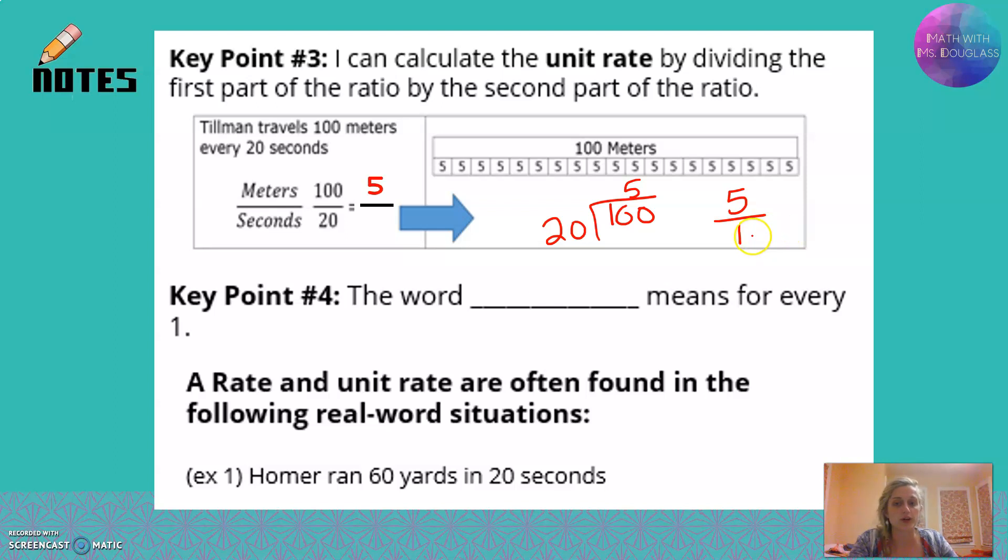And that's where the word per comes in. The word per means for every 1. Think about where you've heard that word in real life. Miles per gallon: how many miles can you drive for every 1 gallon of gas? Miles per hour: how many miles can you drive in every 1 hour? We're going to see an example.